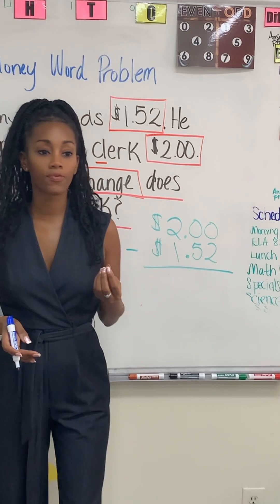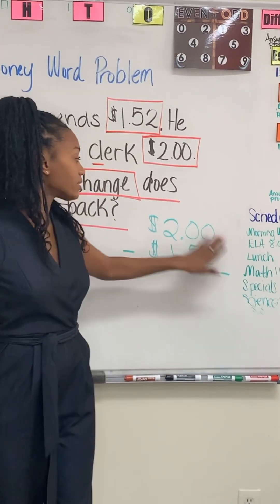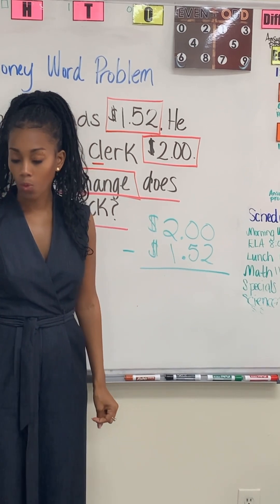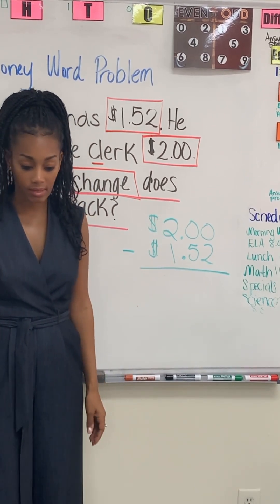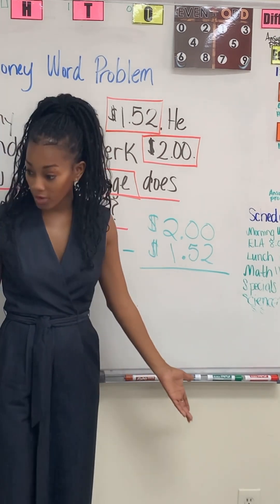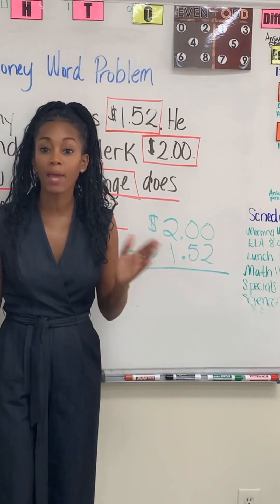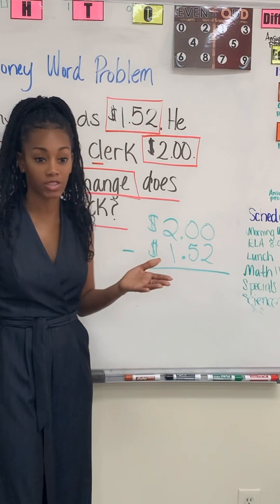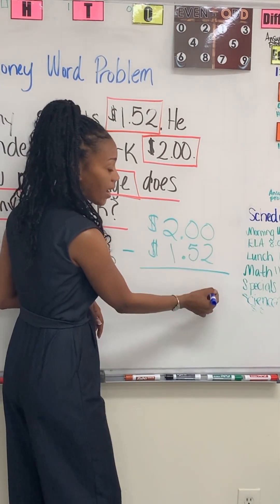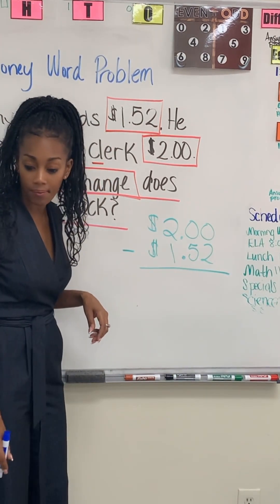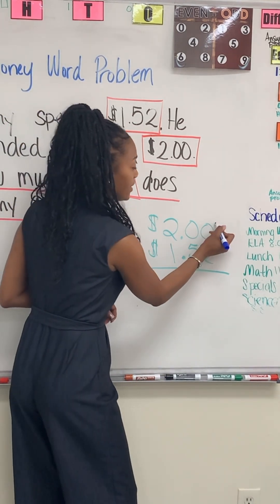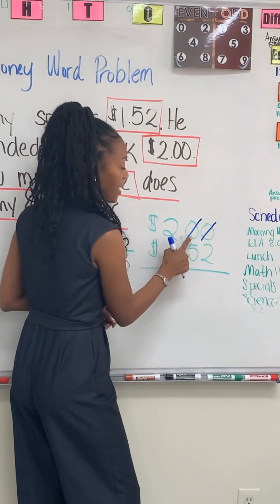Even though we're working with money, this problem looks like subtraction regrouping. We're going to do the same thing as subtraction regrouping. I look in my ones column — there's a problem. You can't subtract from zero, so I need to borrow from my neighbor next door.